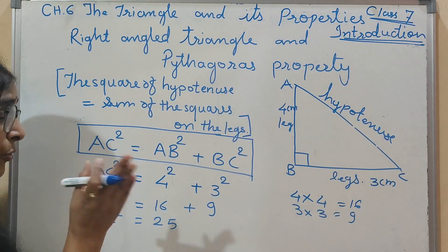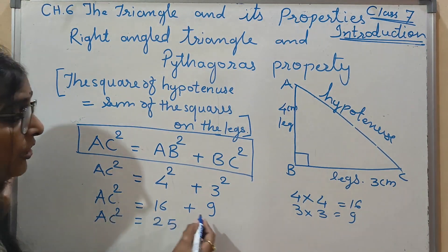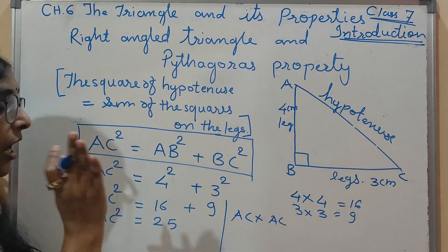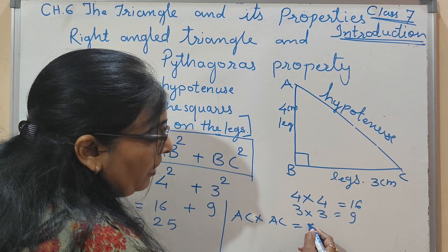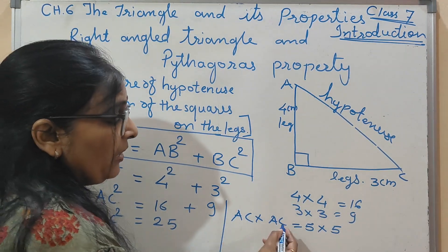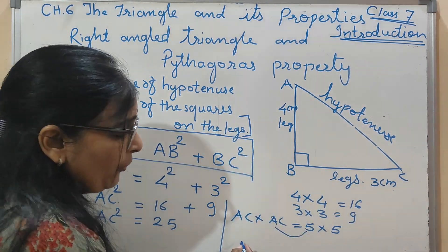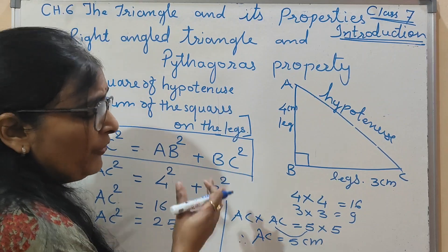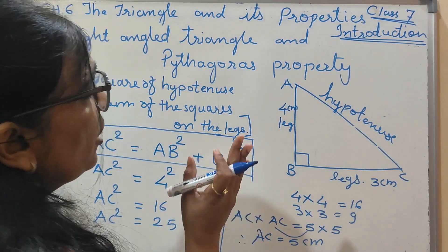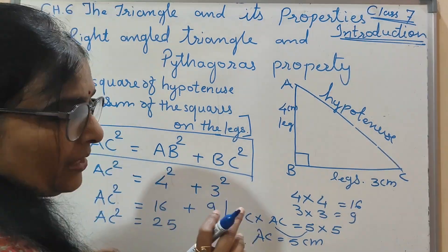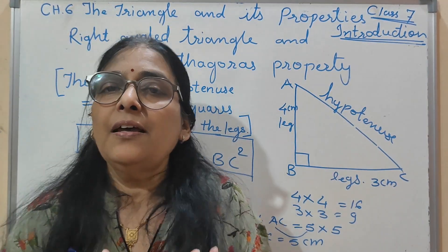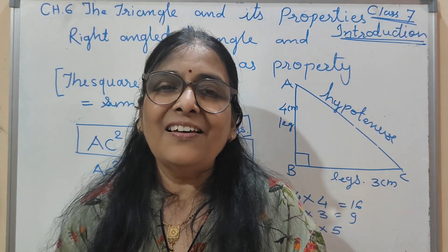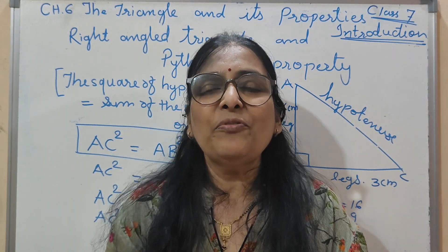If you are confused about the square root: AC square means AC into AC equals 25, and since 5 into 5 equals 25, therefore AC equals 5 centimetres. So the length of the hypotenuse is 5 centimetres. This is the important Pythagoras property. So the introduction of this chapter is over. We will meet in the next video with Exercise 6.1. Please like, share, and subscribe to my channel. Thank you for watching.